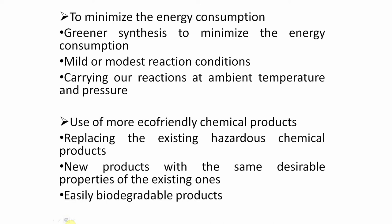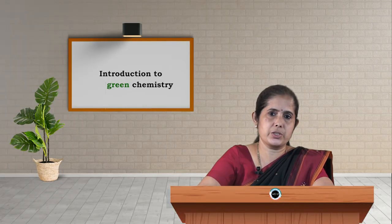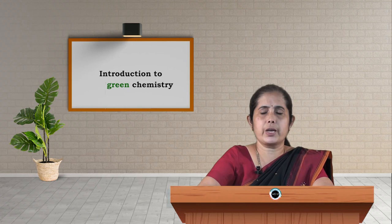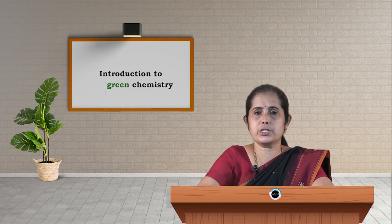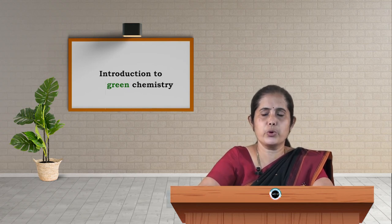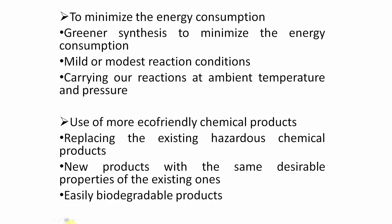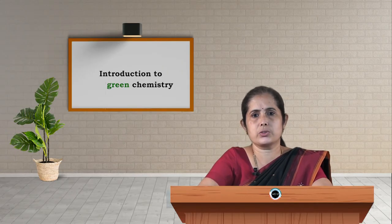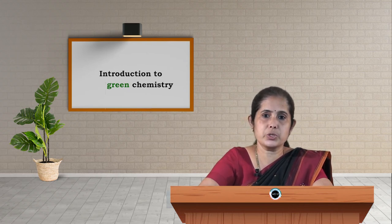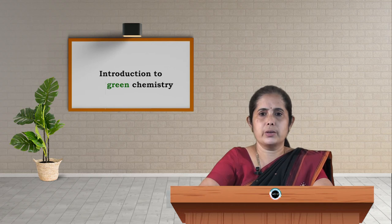The next purpose is to minimize energy consumption. We can do this by carrying out chemical reactions at ambient temperature and ambient pressure. If we carry out reactions at higher temperature, it requires a lot of energy and consumption of energy will be more. We have to carry out the reaction at lower temperature by selecting conditions in which the reaction proceeds at normal temperature and ambient pressure. We can use catalysts or certain reaction conditions in which energy consumption is less, and we should adopt greener synthesis to carry out reactions under mild or modest reaction conditions.